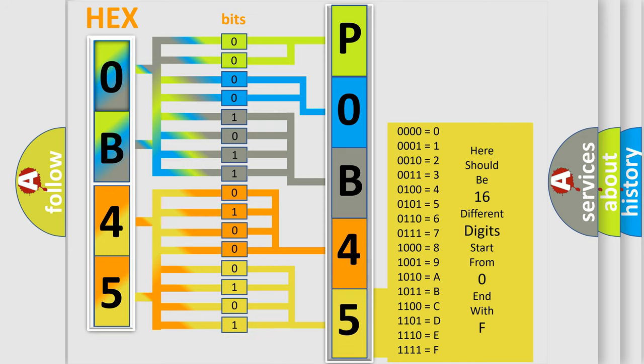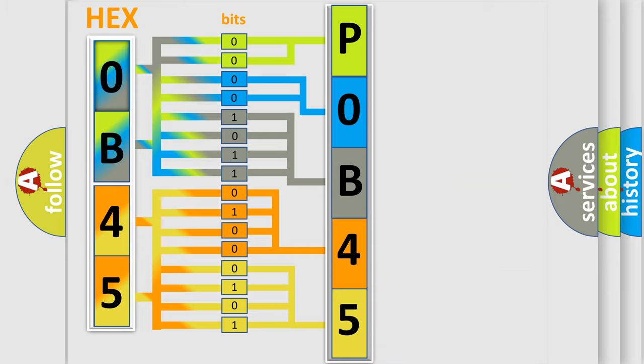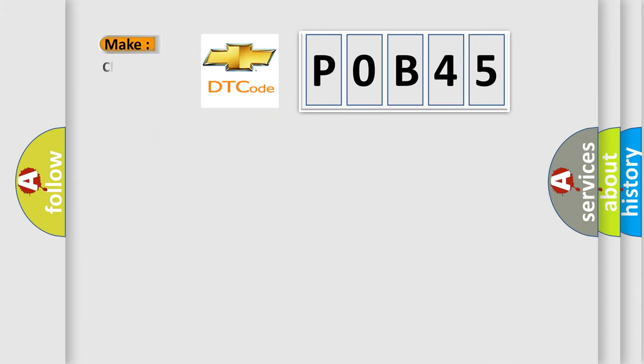We now know in what way the diagnostic tool translates the received information into a more comprehensible format. The number itself does not make sense to us if we cannot assign information about what it actually expresses. So, what does the diagnostic trouble code P0B45 interpret specifically for Chevrolet car manufacturers?